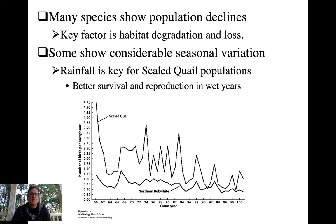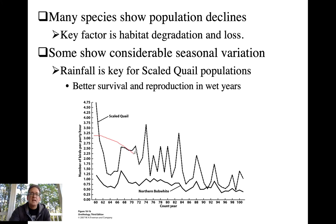That's true for scaled quail and northern bobwhites, but the magnitude of change for scaled quail — a desert-dwelling species more in west Texas — is more considerable because of greater variation in rainfall among years. But again, what you see in general for both of these species is a decline in population numbers over time.